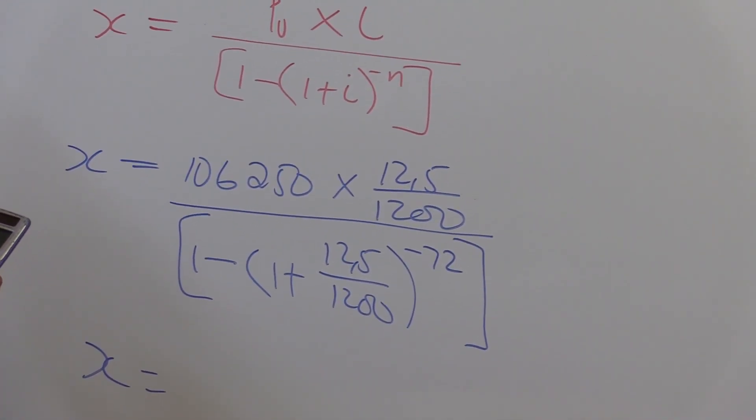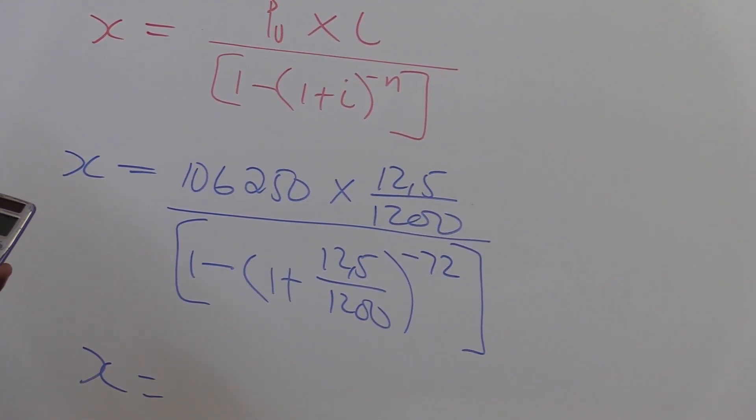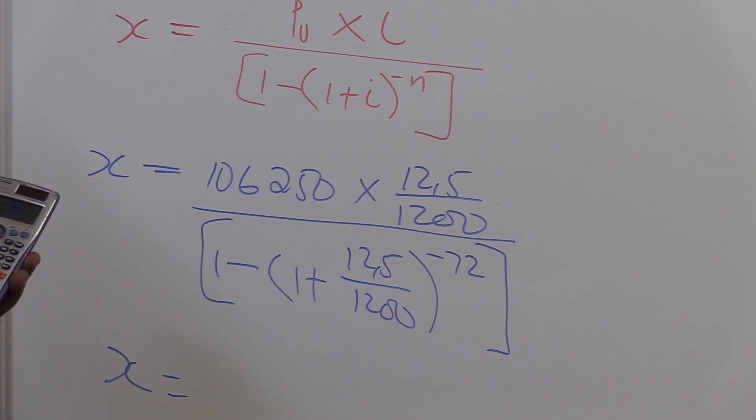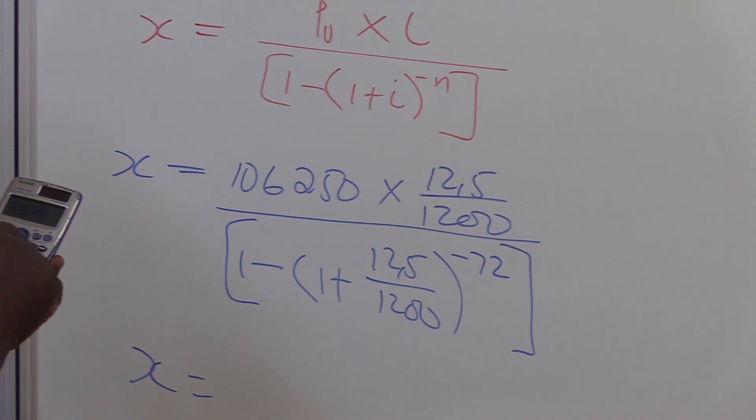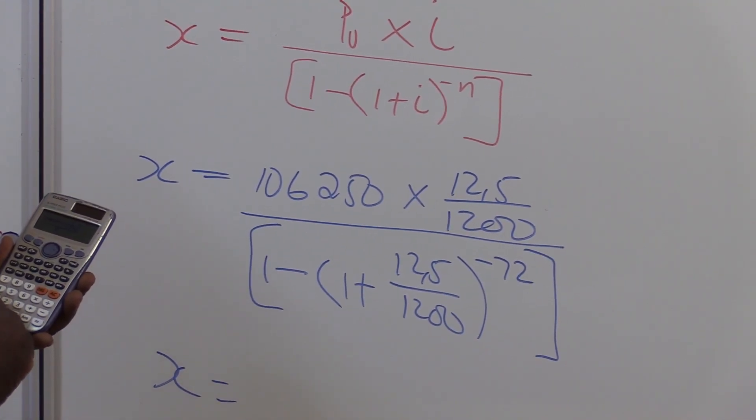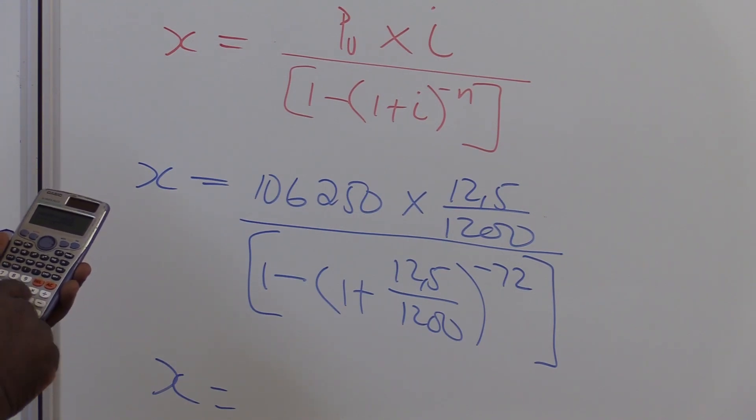We've got 106,250 times another fraction. The numerator is 12.5. And the denominator there is 1,200. You go down. We've got a bracket. Bigger bracket.